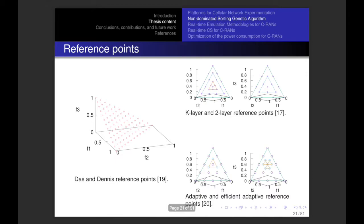Let's see how reference points are generated. The Das and Dennis method distributes reference points homogeneously through the hyperplane. The K-layer and two-layer methods distribute reference points differently to reduce the complexity of the algorithm. Adaptive and efficient adaptive reference points are located dynamically next to the crowded reference points through generations.